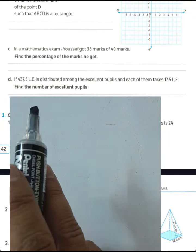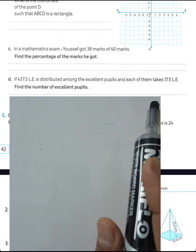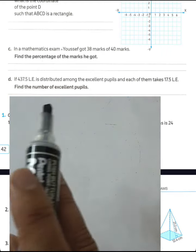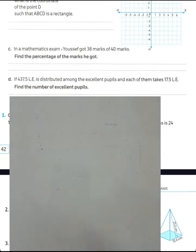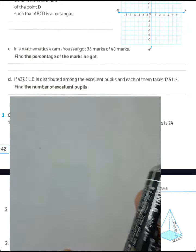The problem states that 437.5 L.E. is distributed among the excellent pupils, and each of them takes 17.5 L.E. We need to find the number of excellent pupils. The money is distributed among a number of people and each one takes 17 and a half.